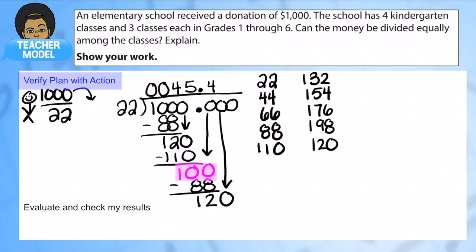Bring down a 0. 120. 120 divided by 22. We did that already too. That was 5. So that's 110. 10 remaining. Let's bring down another 0. I can go in there 4 more times. And I'm going to stop there because we've gone to the nearest thousandths.